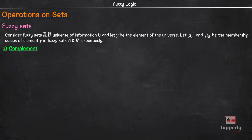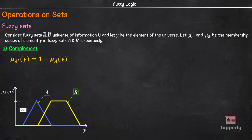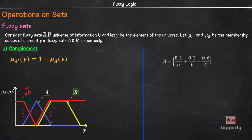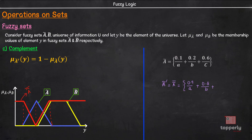Next, we have the complement operation. The complement of fuzzy set A, denoted A complement, has a membership function defined by: mu A complement of Y equals 1 minus mu A of Y. If we consider the membership curve for A, then A complement is given by the red curve shown here. Taking our numerical example, if this is fuzzy set A in universe U, then A complement is given by: 1 minus 0.1, which is 0.9/A; plus 1 minus 0.2, which is 0.8/B; plus 1 minus 0.6, which is 0.4/C. So this is the A complement for this fuzzy set A.